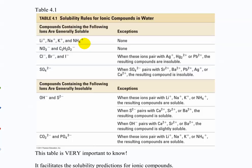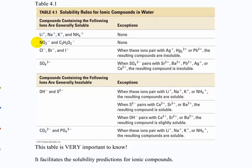The halogens have a couple of exceptions — silver, mercury, and lead. Sulfate has many exceptions. Then there are ions that are generally insoluble: hydroxides, sulfides, carbonates, and phosphates — unless they pair with the always-soluble ions like alkali metals or ammonium. You need to know these rules because they tell you how to determine what's going to precipitate, if anything.